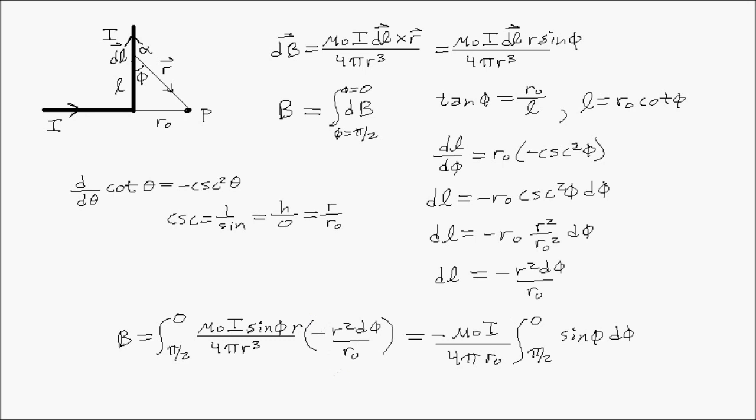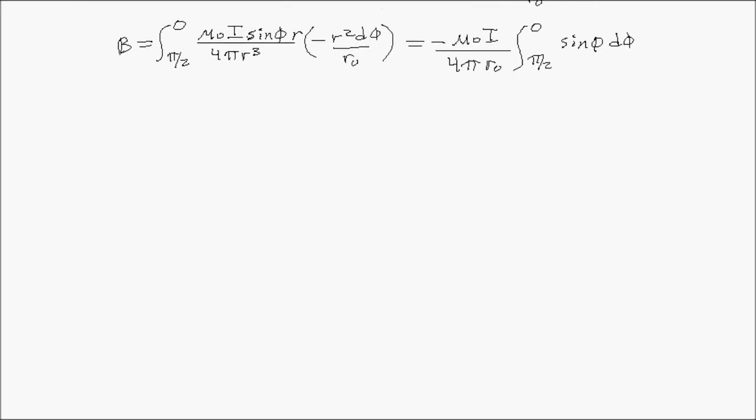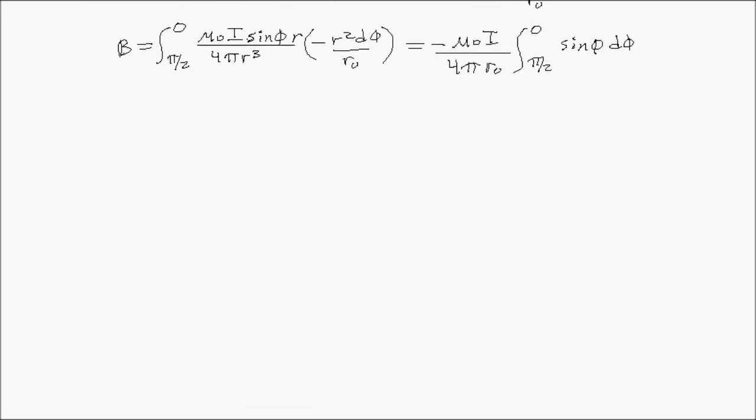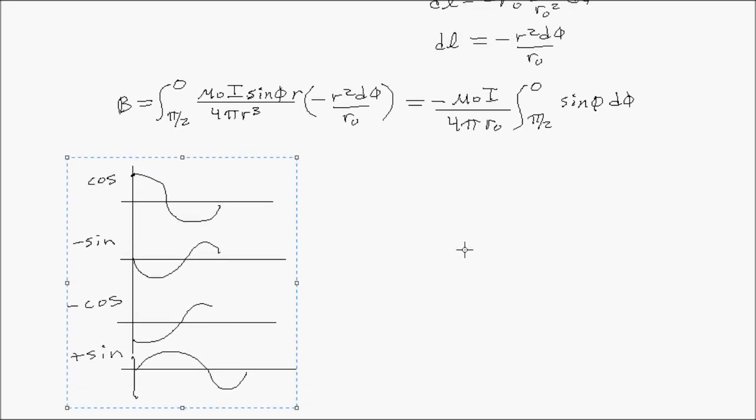4 pi, r's all cancel, and I'm going to have integral from pi over 2 to 0 of the sine of phi d phi. I think I got all of it. Oh, I almost forgot this last time as well. There's an r naught. I don't know why I keep forgetting that. So all the r's have cancelled.